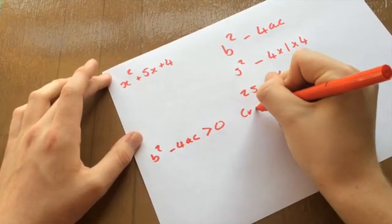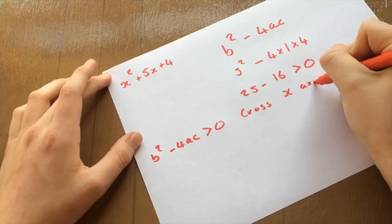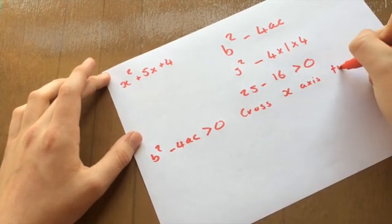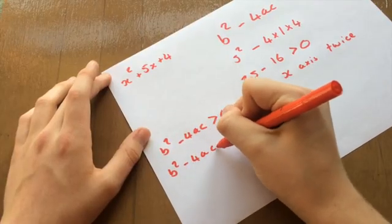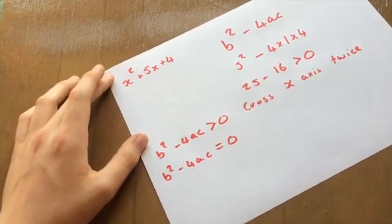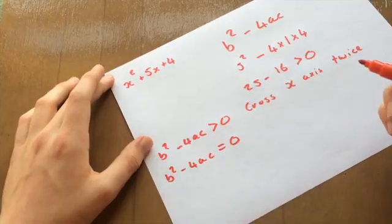Whereas if b squared minus 4ac equals 0, which is the discriminant equals 0, this means that only crosses x axis once. Which means that if we were to sketch a graph of this, it would look something along the lines of this. The graph would come down, touch the x axis, and then go back up. So only at this point is it actually crossing the x axis.